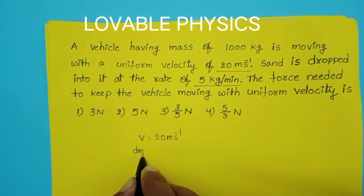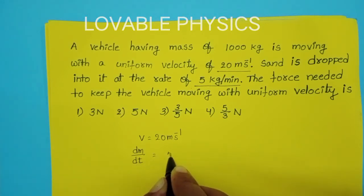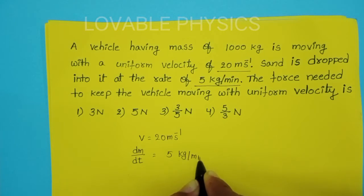So dm/dt equals 5 kg per minute. Convert minute into seconds.